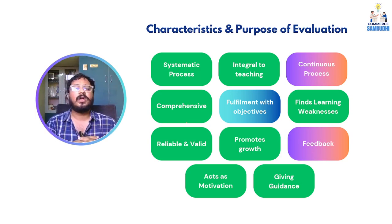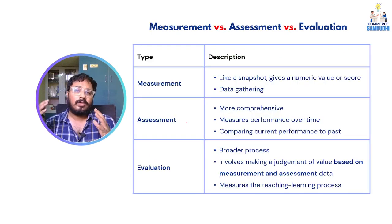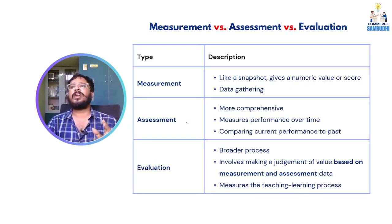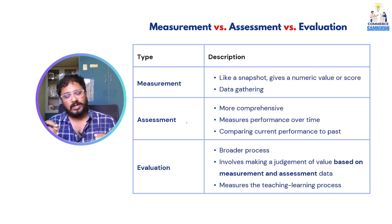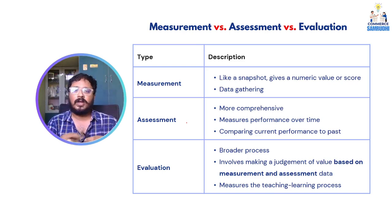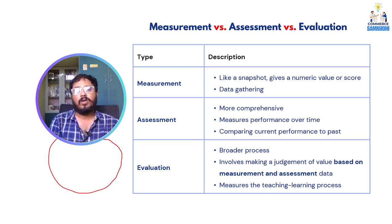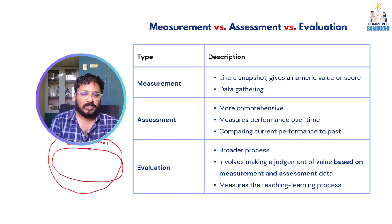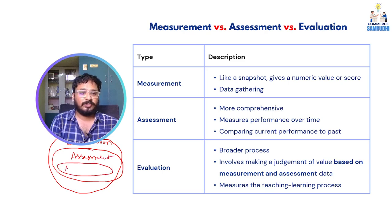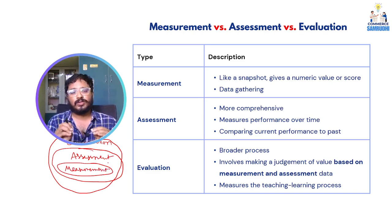These are all various benefits of evaluation. There are three words: measurement, assessment, and evaluation. Measurement and assessment are part of evaluation. Think of it like a Venn diagram — the outer circle is evaluation, inside that is assessment, and inside assessment is measurement. Measurement is a very basic thing — we are collecting information, a student's subject marks, giving a numerical value or score.